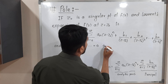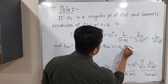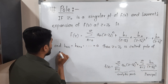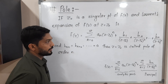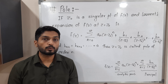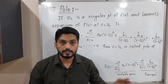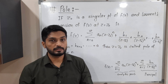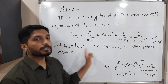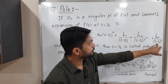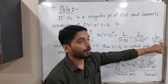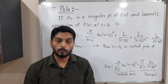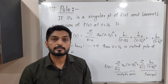If the Laurent expansion terminates at b_n, meaning all remaining b terms are zero, and the highest power of (z minus z-naught) in the denominator is n, then we say z equals z-naught is a pole of order n. This is the definition of pole: the principal part must have a finite number of terms, and the order is determined by the highest power appearing in the denominator.